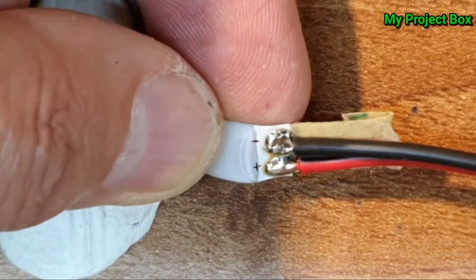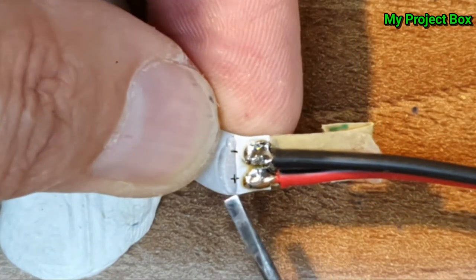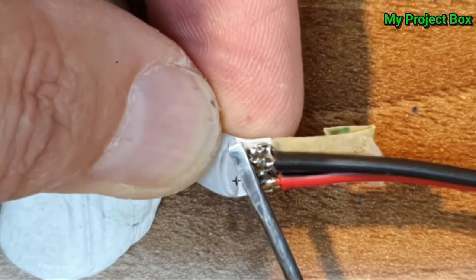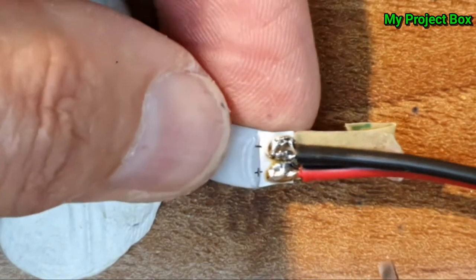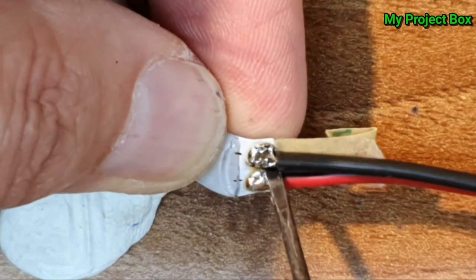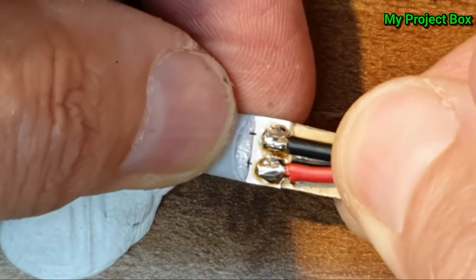You can see that the tape is indicated with positive and negative, so I've tacked the red wire to the positive. Check if there's no bridge between the two. That looks pretty good.